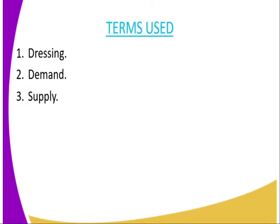The first term is dressing. Dressing refers to the process of removing the digestive system and also the internal organs which are attached to the digestive system. That is what we refer to as dressing, as far as dressing poultry is concerned.